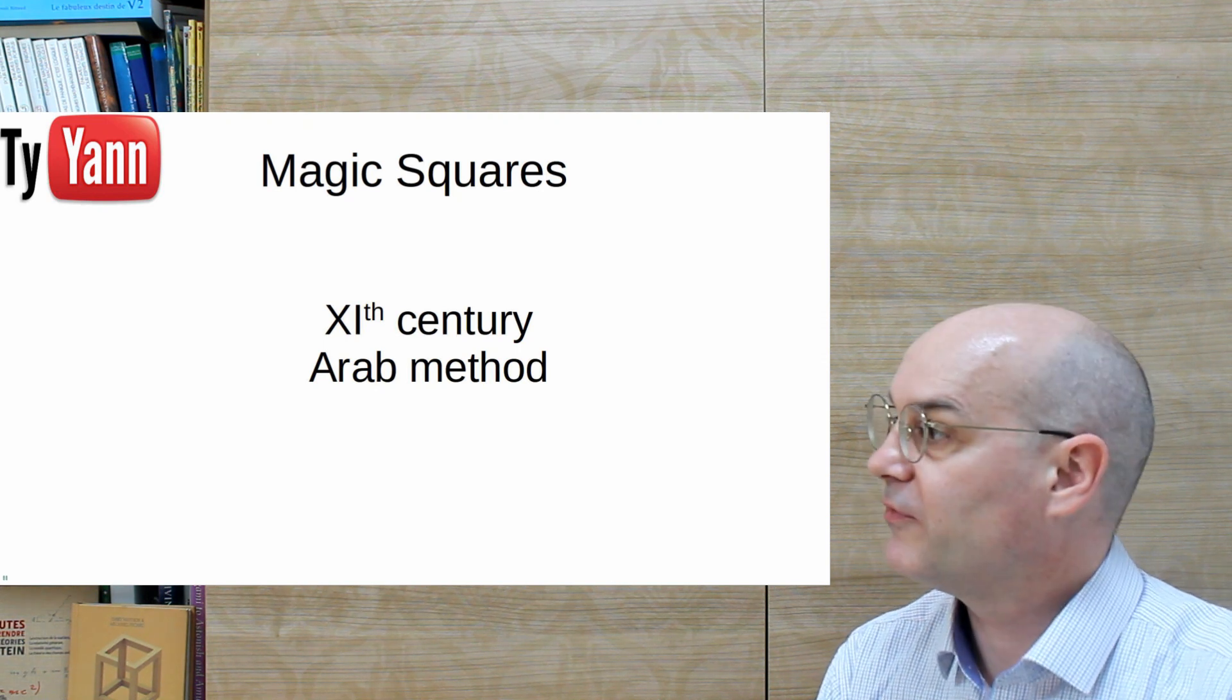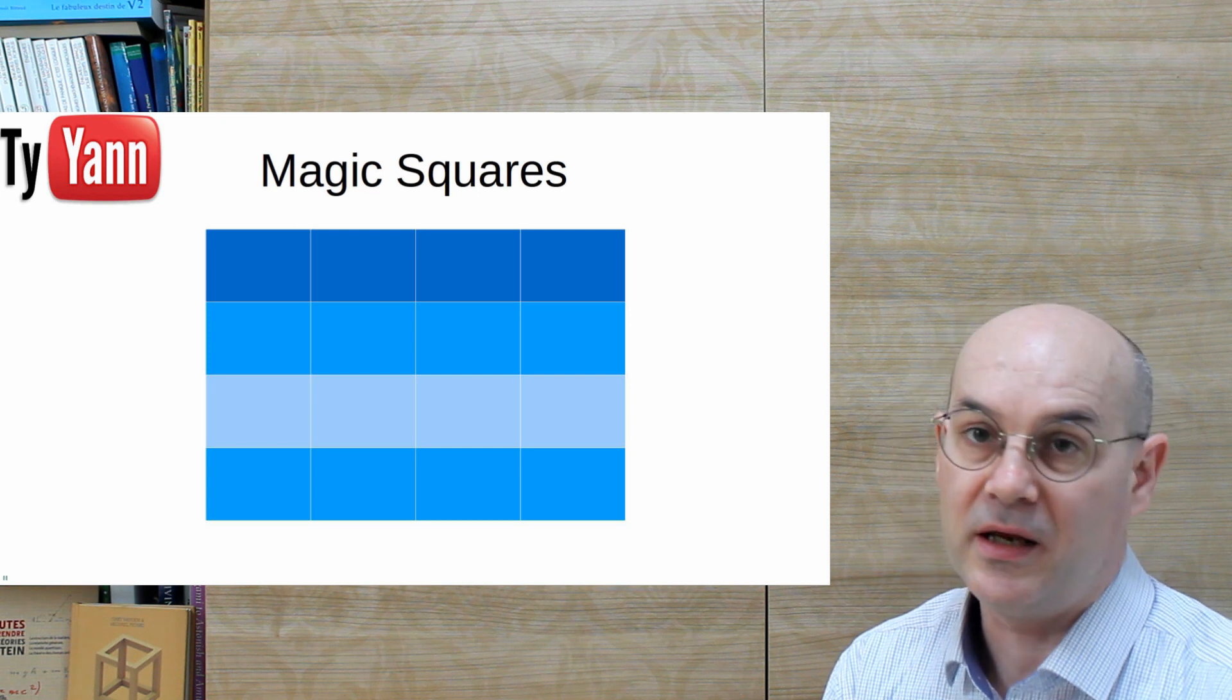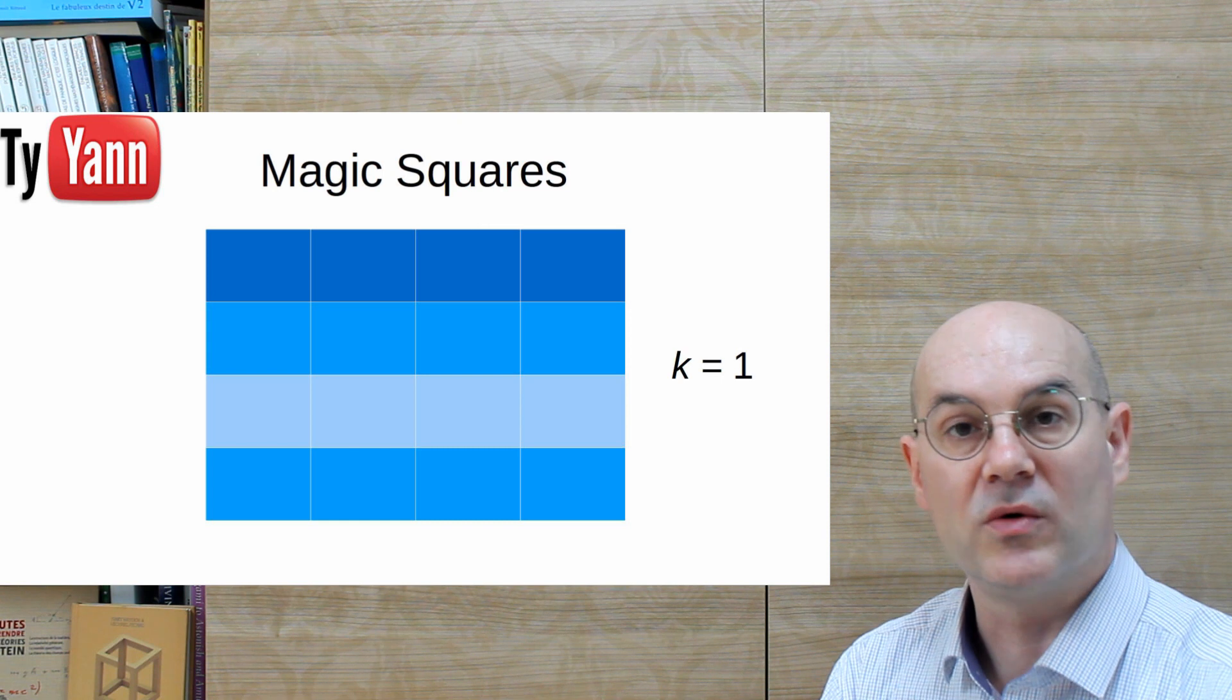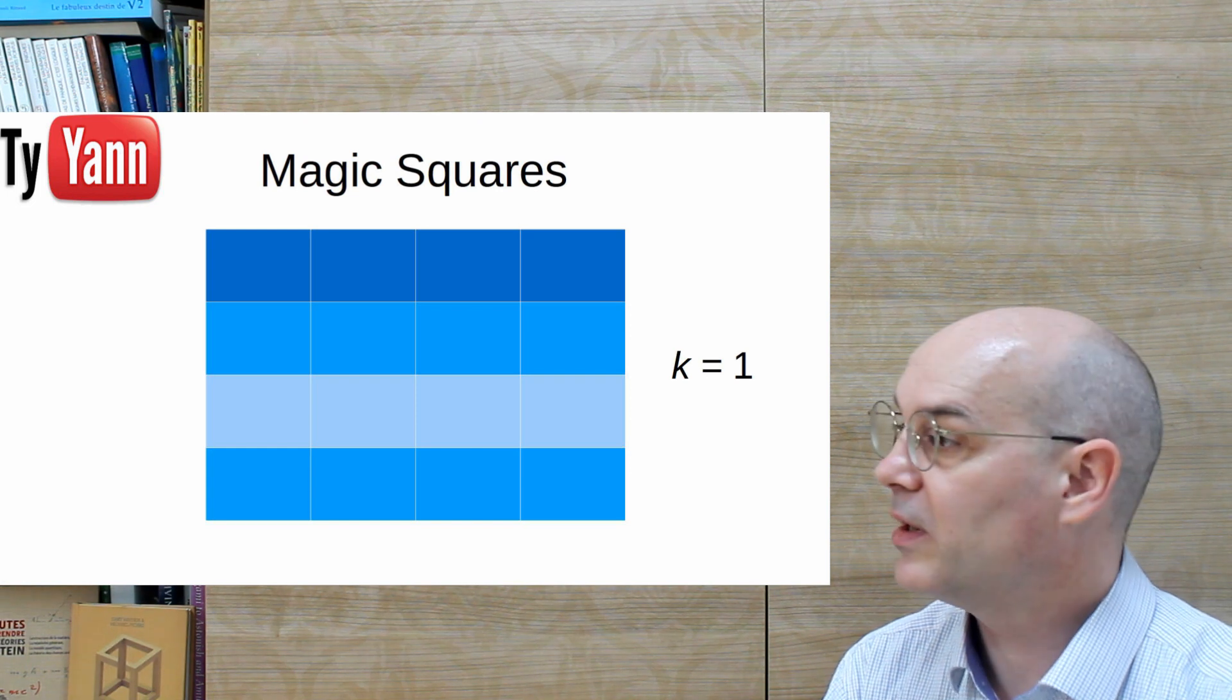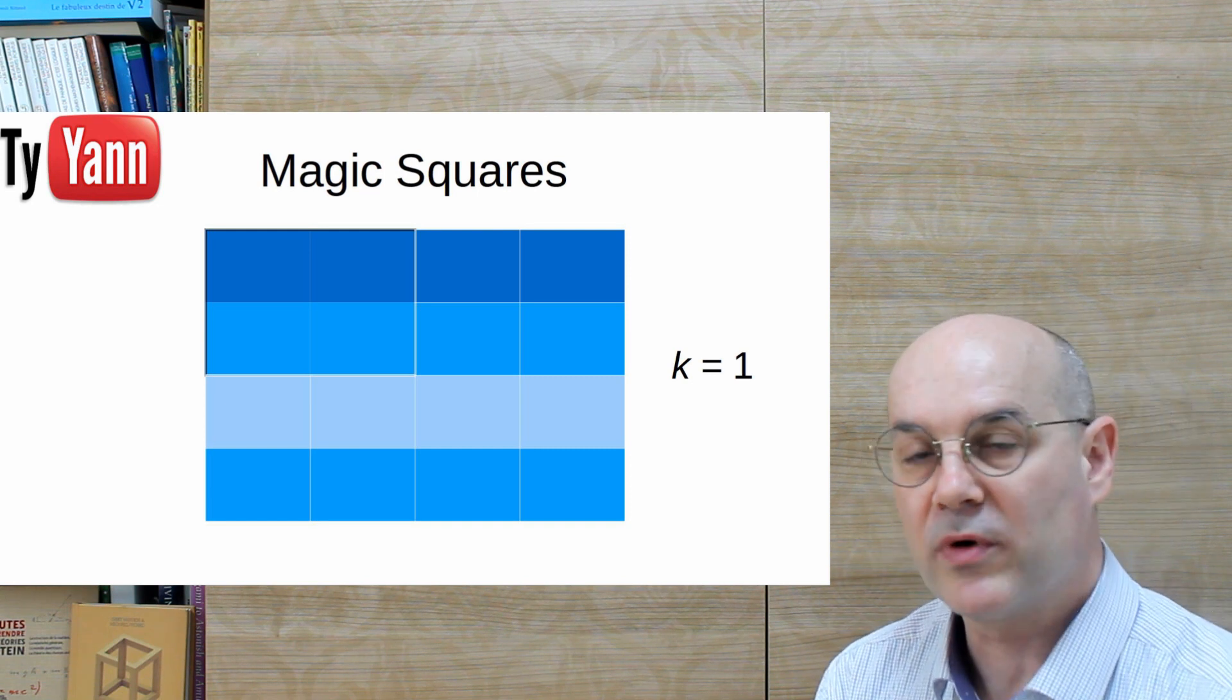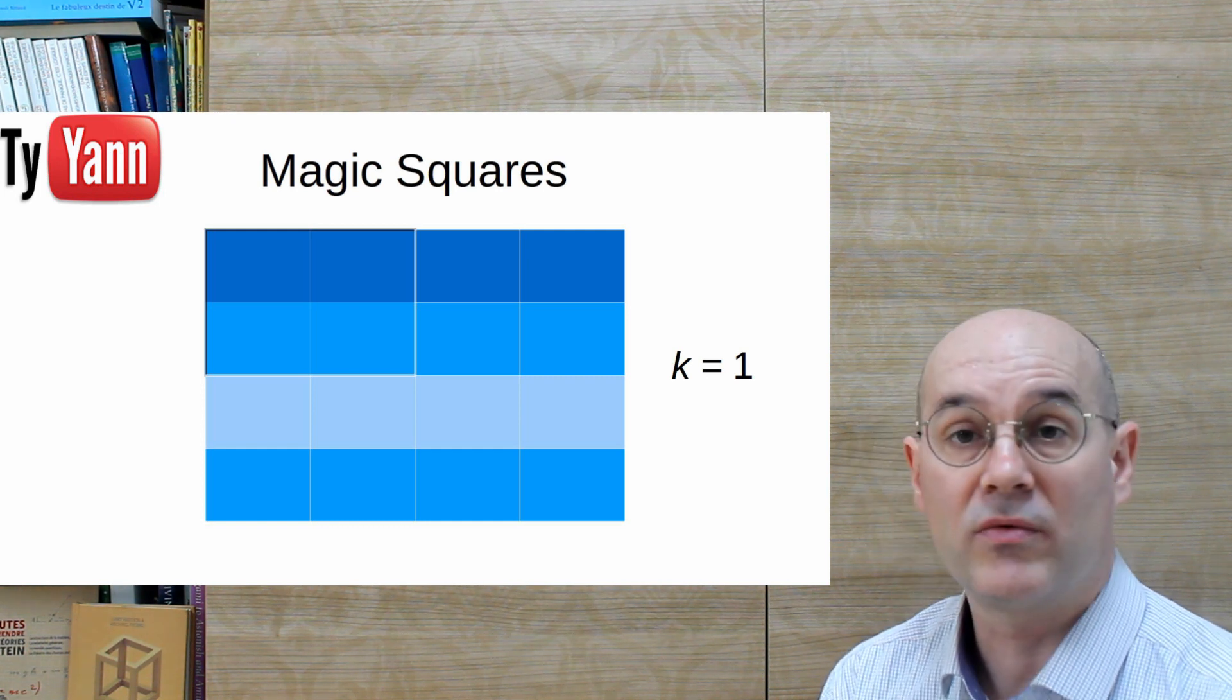So to start this method, very easy, we start with a 4x4 square and here's the technique. You know that k is 1. You have to know that. So here no problem, 4x4, it's 4 times 1, so k is 1. We keep this in mind and we will consider the top left quarter.